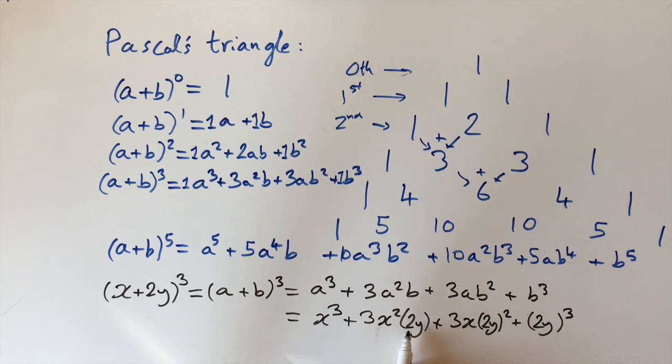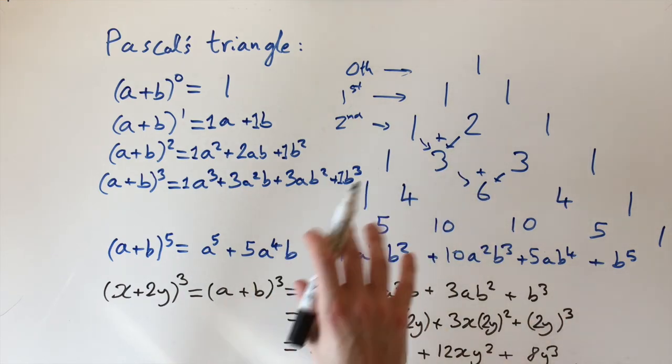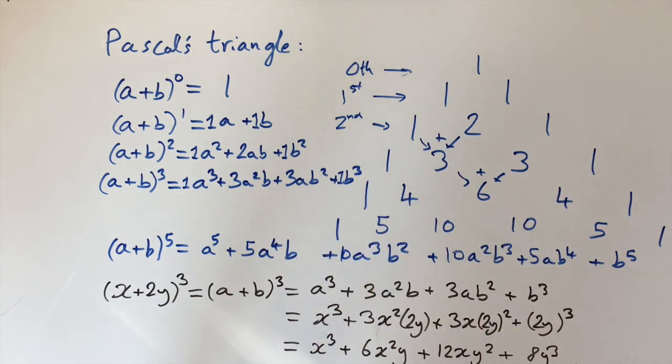This way we can now simplify by just bringing out the constants to the front. So it's just a nice method to find out the constants. This comes out to be x³ + 6x²y, plus we have 2² which is 4, 4 times 3 is 12, so 12xy², and finally we have 2³ which is 8, so 8y³. And there you go. We've worked out what (x+2y)³ is, and also how to find the coefficients of any binomial expansion.